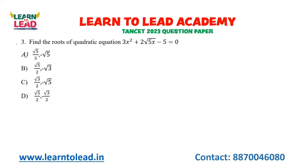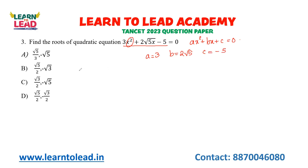The next question is based on quadratic equations. A quadratic equation has x with the highest power 2. The general form is Ax squared plus Bx plus C equals 0. Comparing the given equation, A equals 3, B equals 2 root 5, and C equals minus 5. Using the formula: x equals minus B plus or minus square root of B squared minus 4AC, divided by 2A.